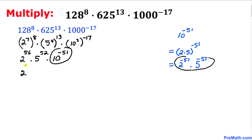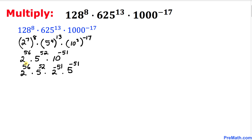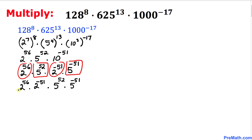Let me replace that part with the broken-down form. So the full expression becomes: 2 power 56 times 5 power 52 times 2 power negative 51 times 5 power negative 51. Now let's rearrange: 2 power 56 and 2 power negative 51 go together, and 5 power 52 and 5 power negative 51 go together — grouping by the same base.